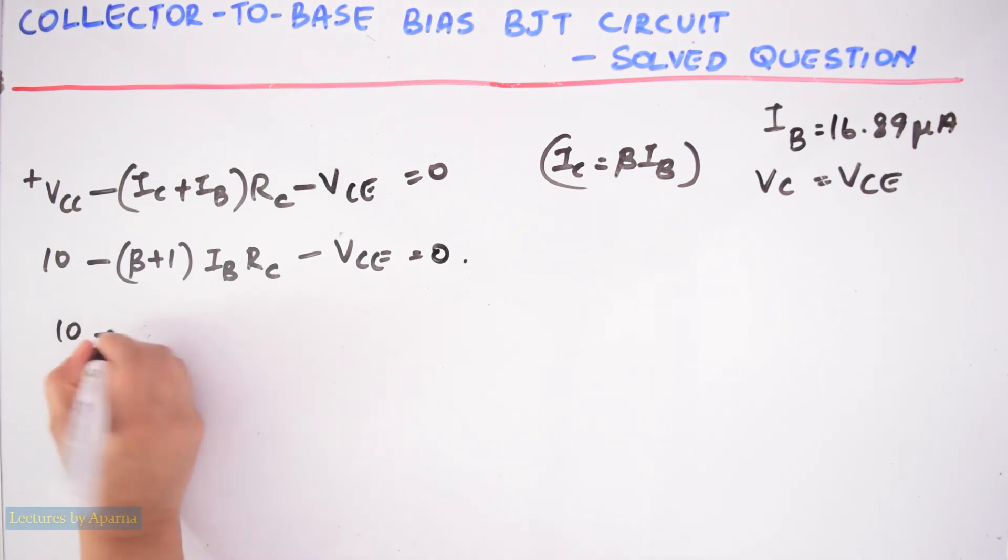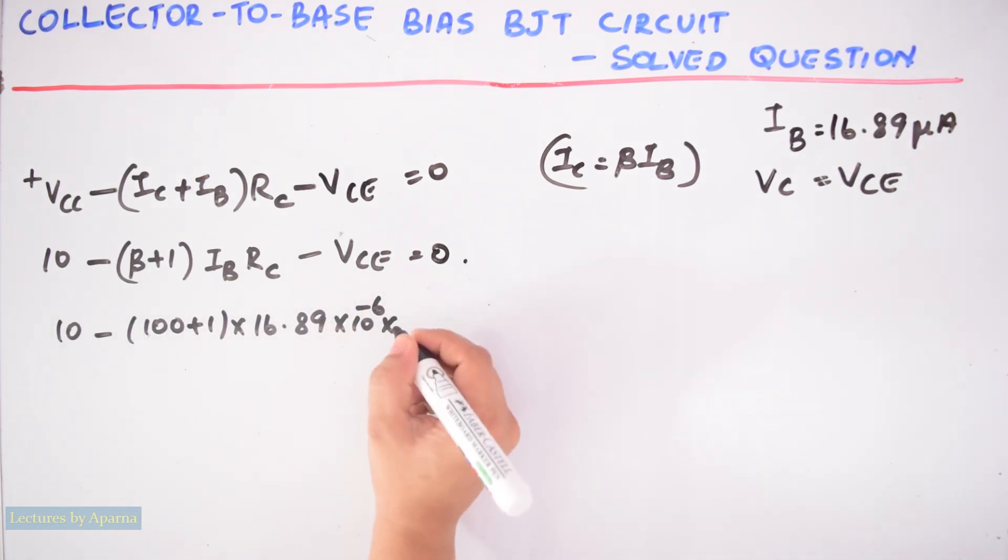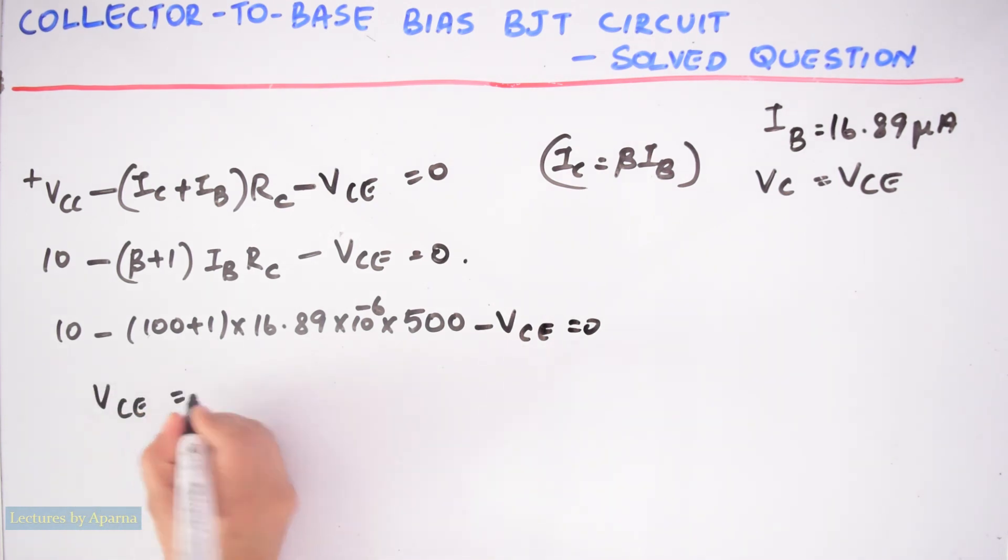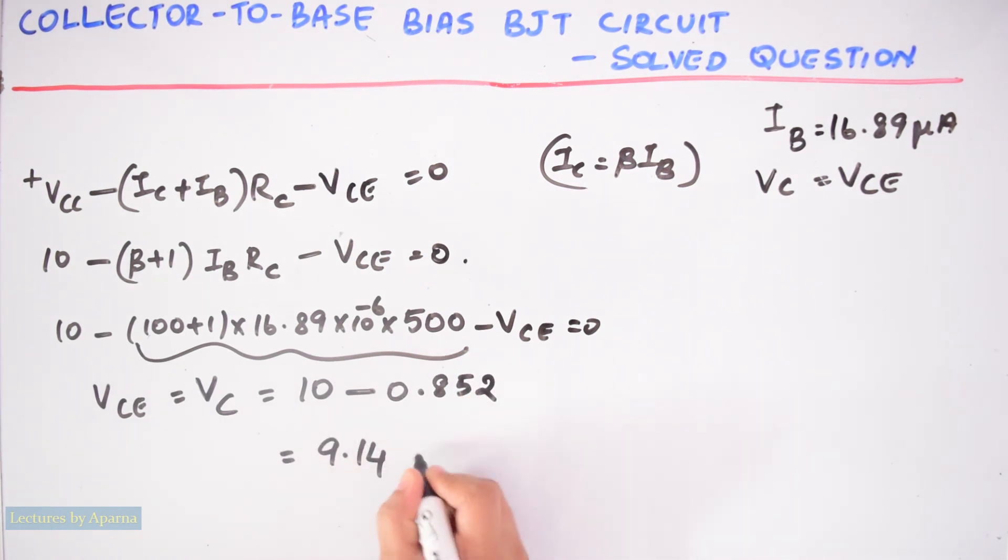10 minus (100 plus 1) into IB 16.89 microamperes into RC is 500 minus VCE equal to 0. So I can write VC equal to VC. So VC will be equal to 10 minus this term. You will get it as 0.852. This will be equal to 9.148 volts. So we got VC and IB.